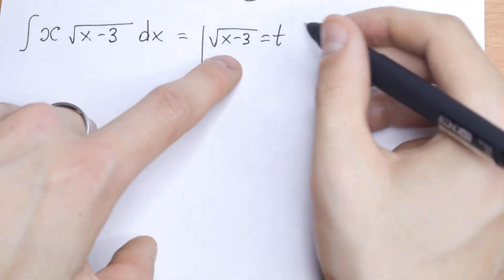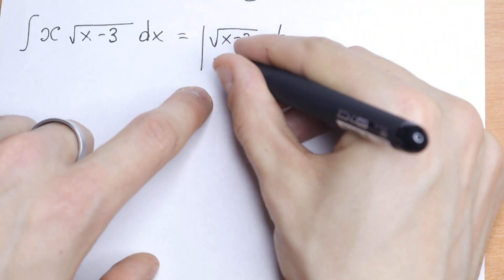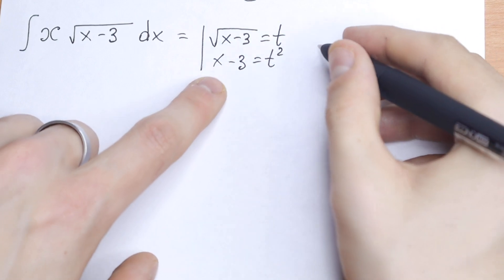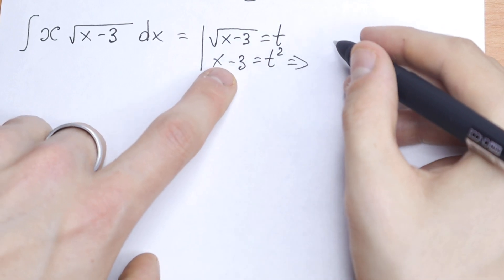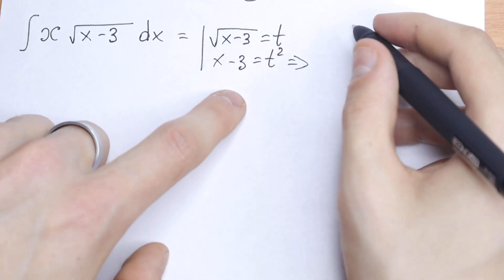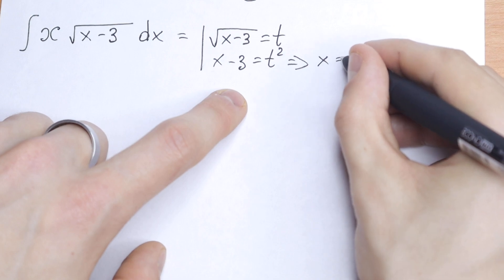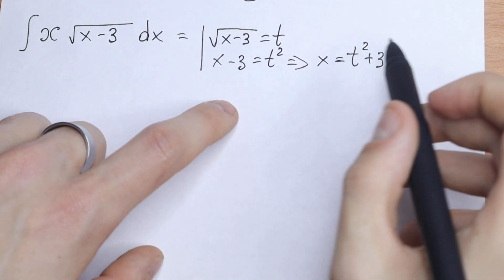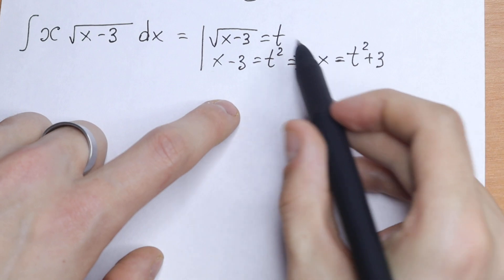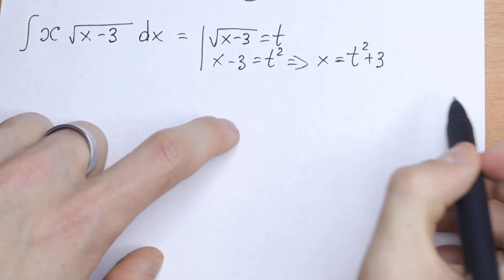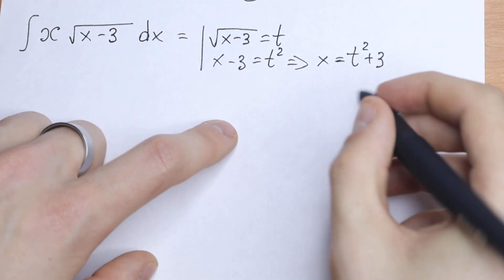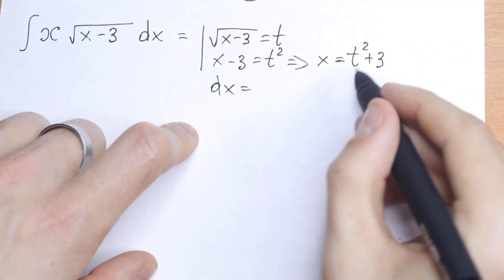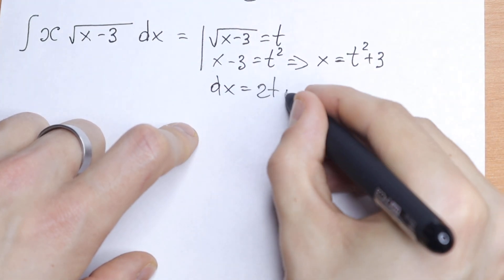Let's raise both sides to the second power — we'll have x minus 3 equal to t squared. Bringing the 3 to the right, we get x equals t squared plus 3. Now let's find dx by differentiating the right side: dx equals 2t dt.